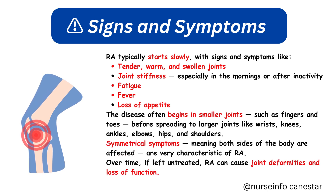Early signs include tender, warm, and swollen joints; joint stiffness especially in the mornings or after inactivity; fatigue; fever; and loss of appetite. The disease often begins in smaller joints such as fingers and toes before spreading to larger joints like wrists, knees, ankles, elbows, hips, and shoulders.